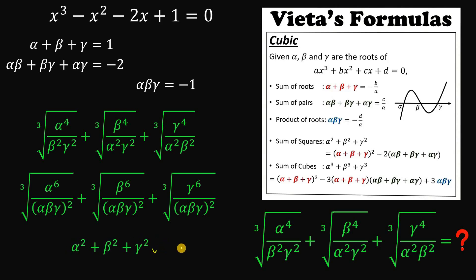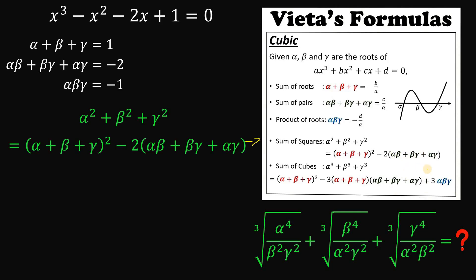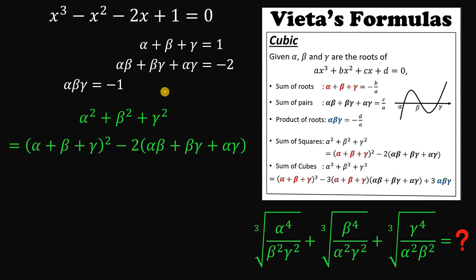So we need to evaluate alpha squared plus beta squared plus gamma squared. Using the identity: alpha squared plus beta squared plus gamma squared equals (alpha plus beta plus gamma) squared minus 2 times (alpha·beta plus beta·gamma plus alpha·gamma). We know these values from Vieta's formula: the sum is 1 and the sum of pairs is negative 2. So alpha squared plus beta squared plus gamma squared equals 1 squared minus 2 times (negative 2), which equals 1 plus 4, which equals 5.